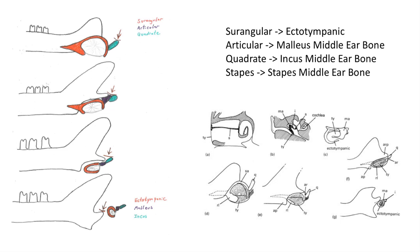At this stage, the jaw joint shifts from between the quadrate and articular to between the squamosal and dentary, which means that the tympanic membrane no longer has to be attached to the lower jaw and can migrate up to the side of the head, where it is found in modern mammals.